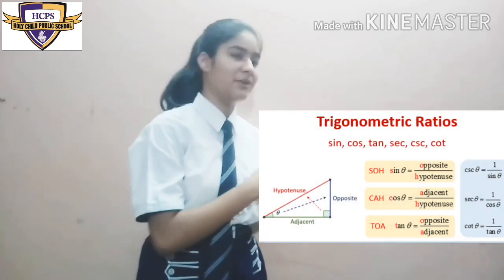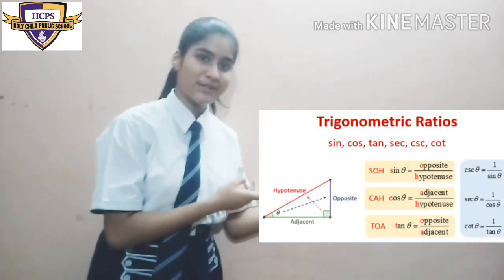Now, the question arises: how can we find the distances or the heights of these monuments and the width of the river? We can find these things from the trigonometric ratios.